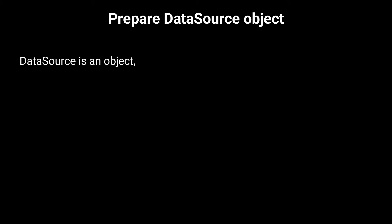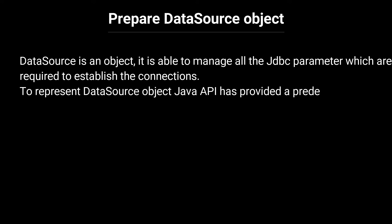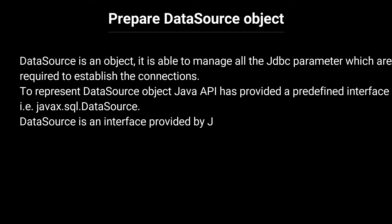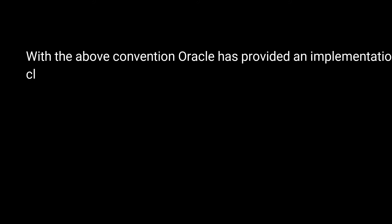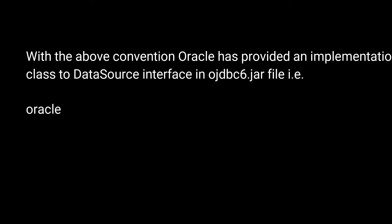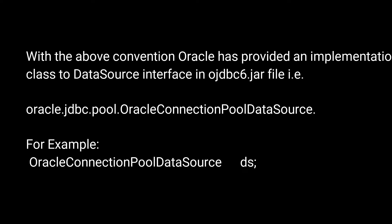Step 1: Prepare a DataSource object. DataSource is an object able to manage all the JDBC parameters required to establish connections. To represent a DataSource object, the Java API provides the interface javax.sql.DataSource. DataSource is an interface provided by the JDBC API, but its implementation classes are provided by database vendors. Oracle provides an implementation class in the ojdbc6.jar file: oracle.jdbc.pool.OracleConnectionPoolDataSource. For example: OracleConnectionPoolDataSource ds = new OracleConnectionPoolDataSource();